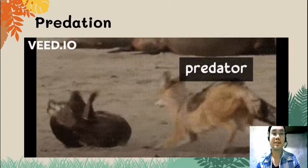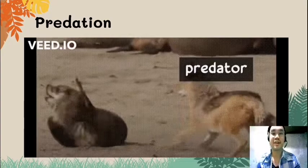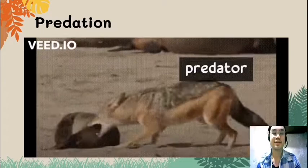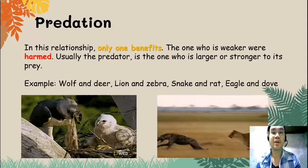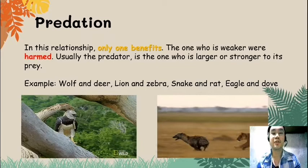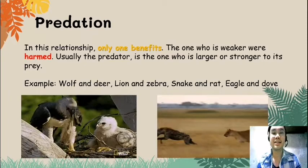In this example, we can see a seal being hunted by the fox. The fox here is the predator, and the seal is the prey. The predator, who is the one that is larger or stronger, survives while the weaker prey will be harmed and might die. Other examples of this relationship are wolf and deer, lions and zebras, snakes and rats, and eagles and doves.